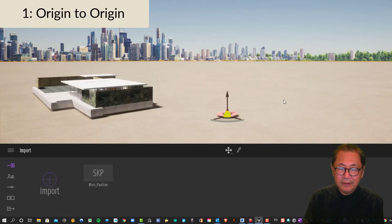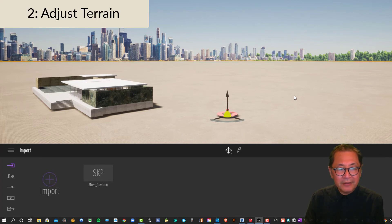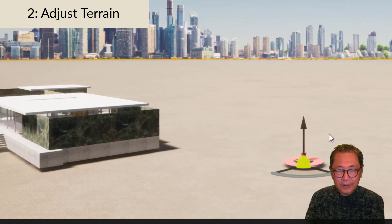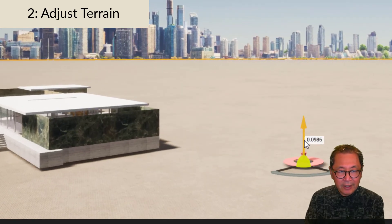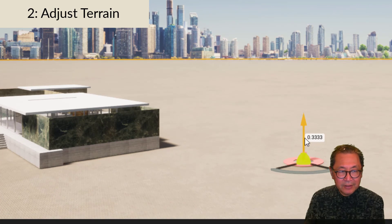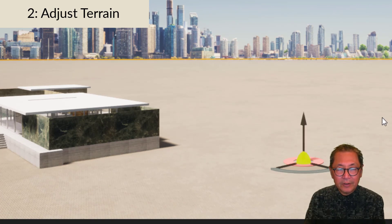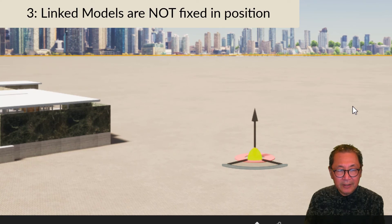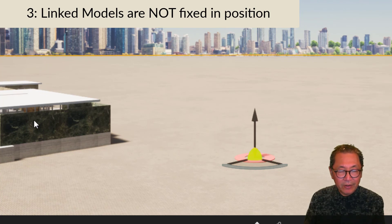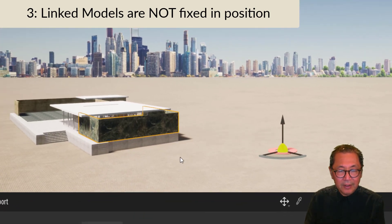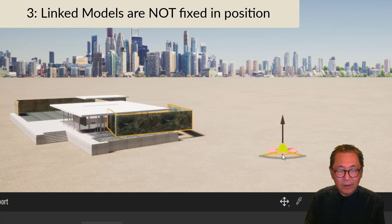If you select the terrain, you find that the origins are aligned. The second thing to note is the terrain is slightly below the imported model, so to adjust it, you select the terrain and adjust the levels as you need. The third thing to note — and this is the key difference between a linked model and an imported model — a linked model cannot be moved, but an imported model you can select any parts of the model and you can rotate it or move it.